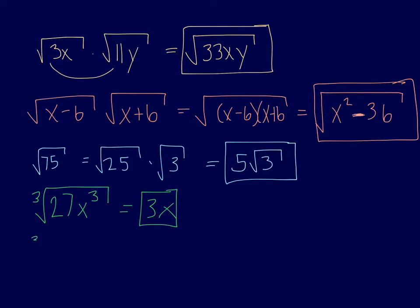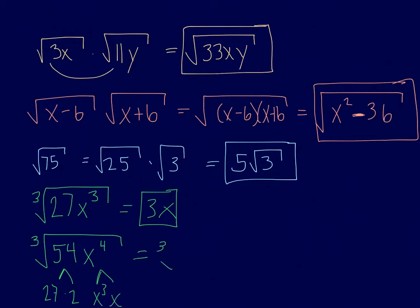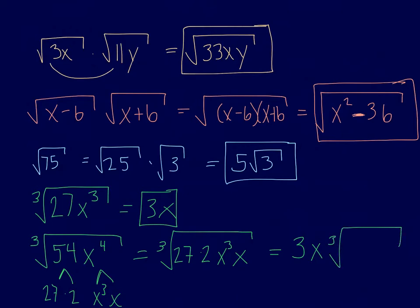Let's try one a little different: the cube root of 54x⁴. Similar to the previous example — 54 is 27 times 2, and the perfect cube within x⁴ is x cubed times x. So we rewrite as the cube root of 27 times 2 times x cubed times x. Anything that is a perfect cube, like the 27 and the x cubed, can be cube-rooted and pulled out front. Anything that cannot be simplified stays inside, giving us 3x times the cube root of 2x.